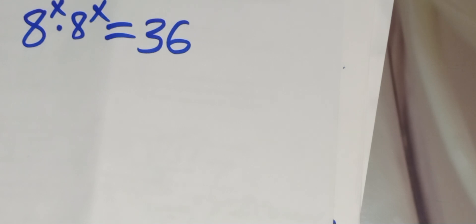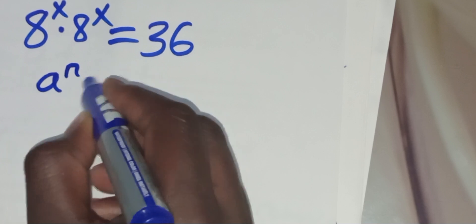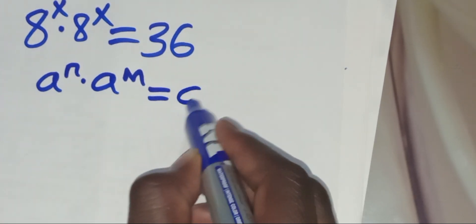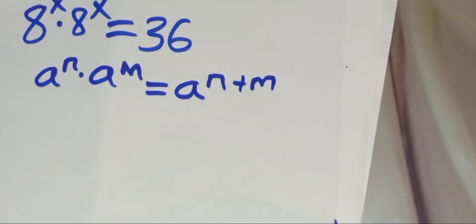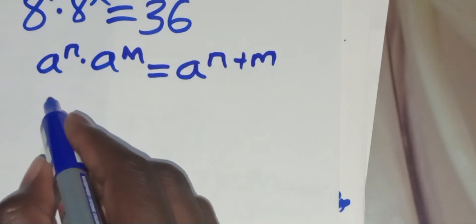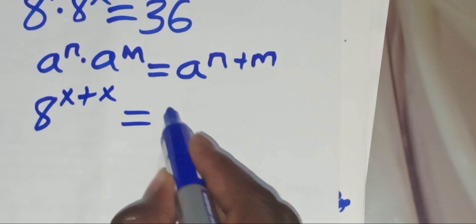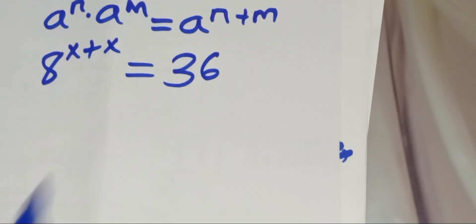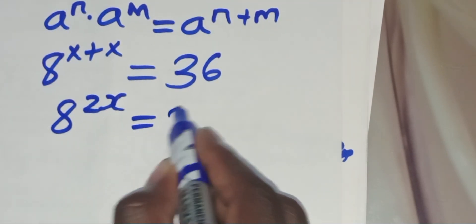As you can see, the exponential equation is in the form of a to the power n multiplied by a to the power m, which you can express as a raised to the power n plus m. Applying this property, we'll have 8 raised to the power x plus x, which equals 8 raised to the power 2x, and this is equal to 36.